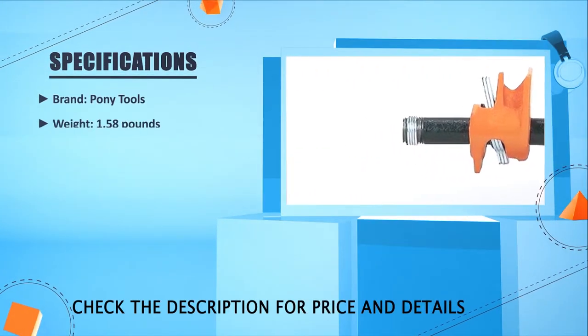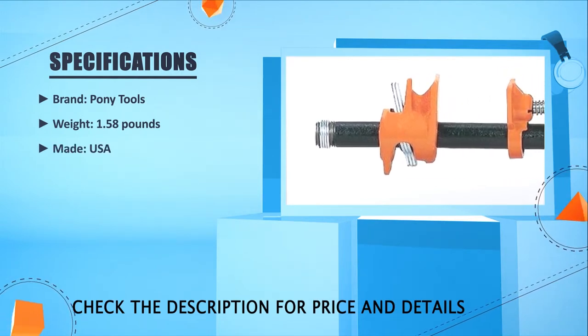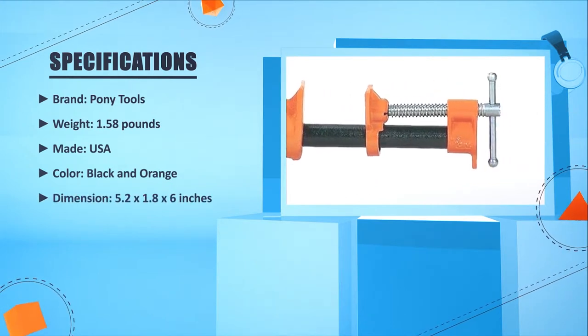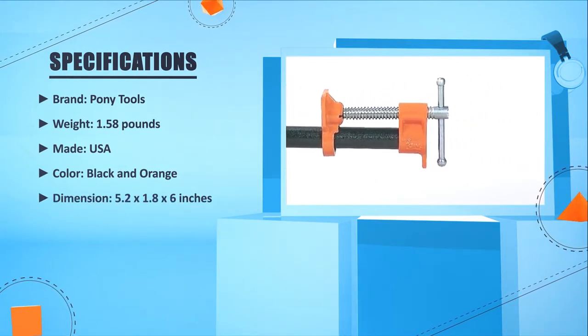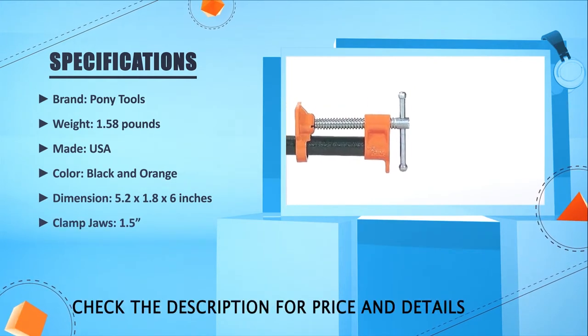Brand: Pony Tools. Weight: 1.58 pounds. Made: USA. Color: Black and Orange. Dimension: 5.2 x 21.8 x 26 inches. Clamp jaws: 1.5 inches.